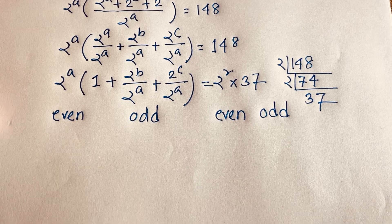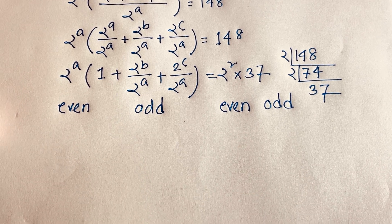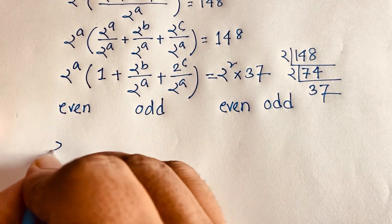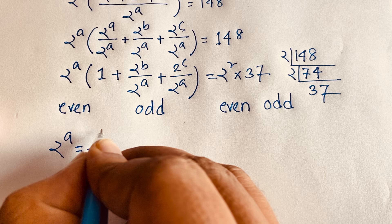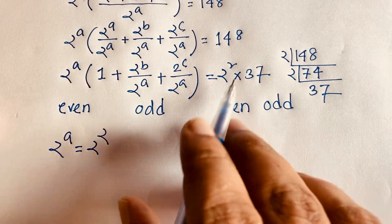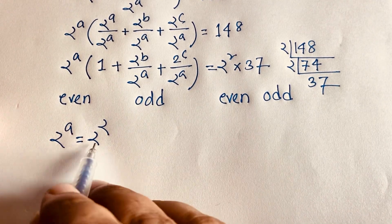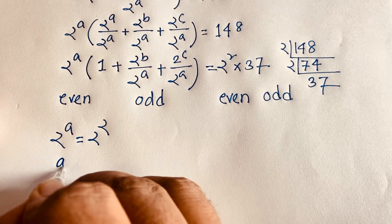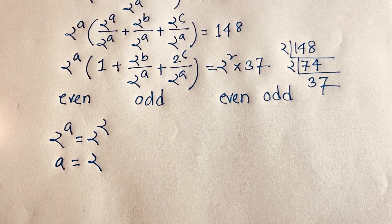Now at this moment, if I compare this equation with this equation they are equal. So I can say 2 to the power a is equal to 2 to the power 2. According to the exponential law, the bases are the same, so the exponents are equal. Therefore a is equal to 2.